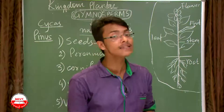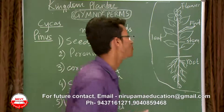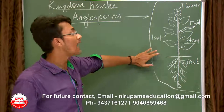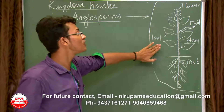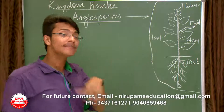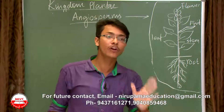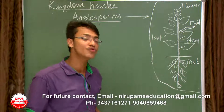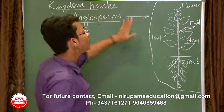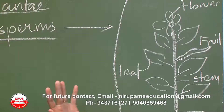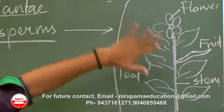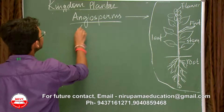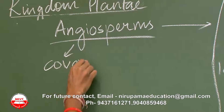The last division is angiosperms. A basic diagram of an angiosperm plant shows flowers, fruit, leaves, stem, and root. In pteridophytes we got true roots and stems, and in gymnosperms also there were true roots and true stems. Angiosperms are considered the most developed division of the plant kingdom.